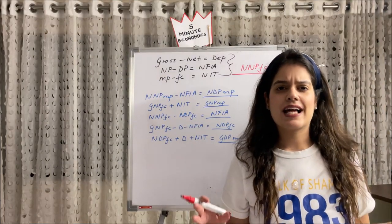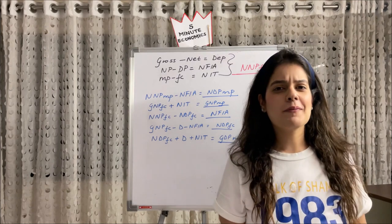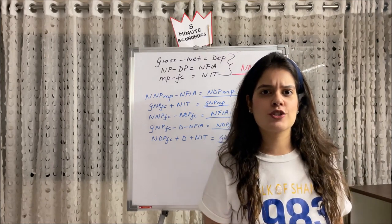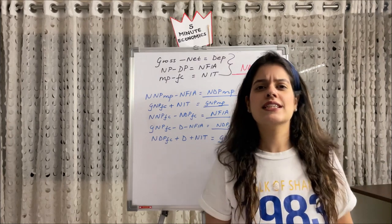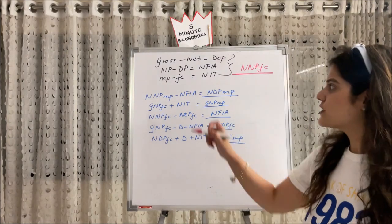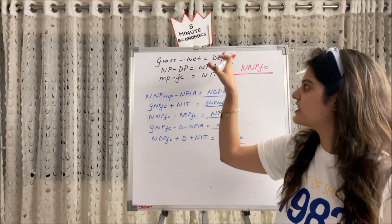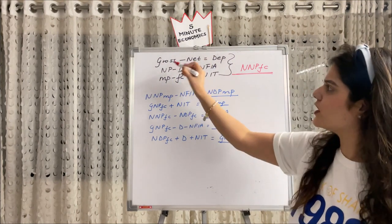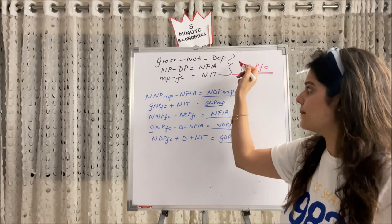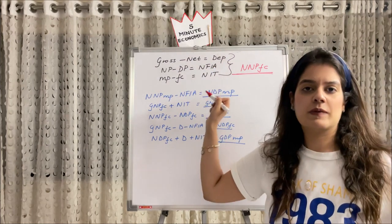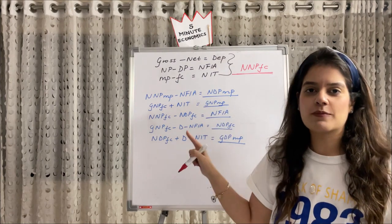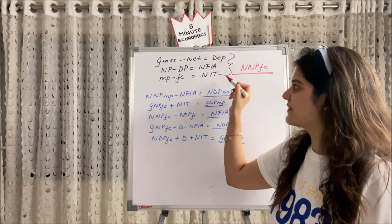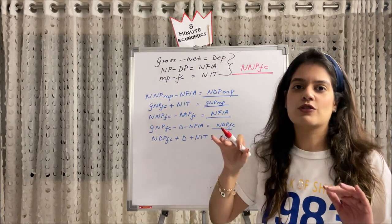Here is a recap of the three key equations you must remember to solve all numericals: (1) Gross − Net = Depreciation (D); (2) National Product − Domestic Product = NFIA; (3) Market Price − Factor Cost = NIT. If you remember these three, you can rearrange them to get any answer.